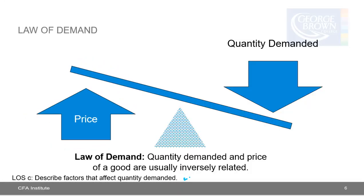Learning outcome statement C: describe factors that affect quantity demanded. Demand refers to the quantity of a product or service buyers desire to buy. It's logical that if the price of a product goes up, consumers will normally buy less. This leads us to the law of demand, which states that quantity demanded and price of a good are usually inversely related. As the price goes up, quantity demanded decreases. If the price goes down, then the quantity demanded would go up.